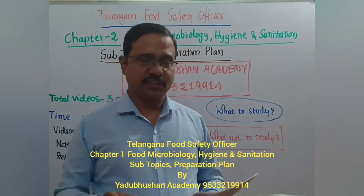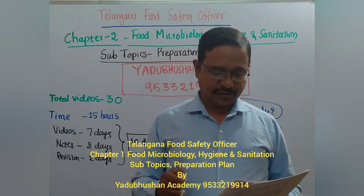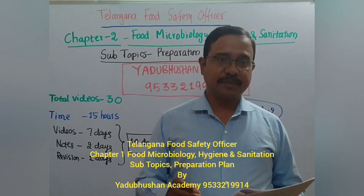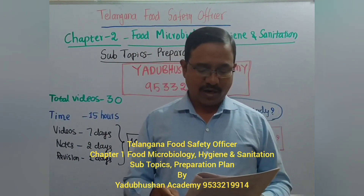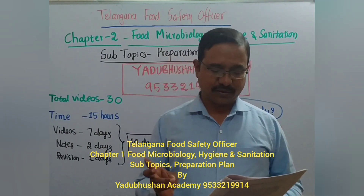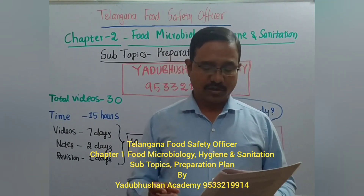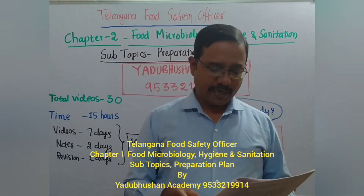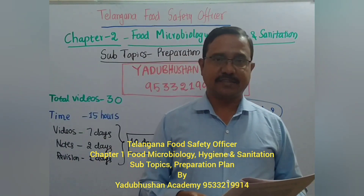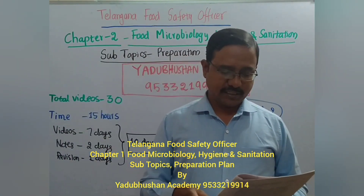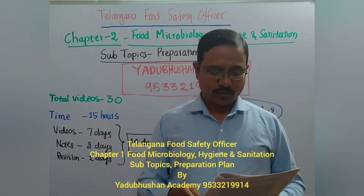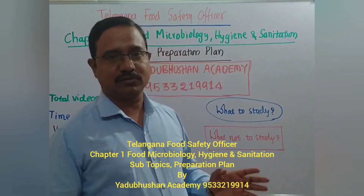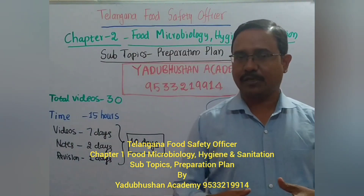Topics in Hygiene and Sanitation in the Food Sector include: Pest Control Measures, Garbage and Sewage Disposal, Water Sources and Purification, Hazard Analysis and Critical Control Points (HACCP), Good Manufacturing Practices (GMP), Good Hygienic Practices (GHP), and Good Laboratory Practices (GLP). These are among the key subtopics in this section.